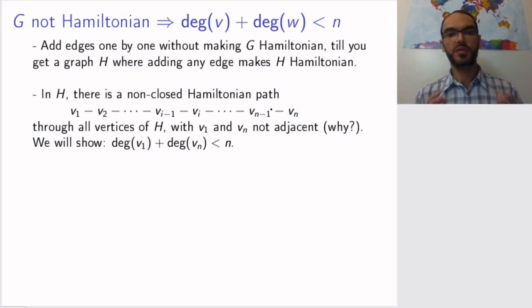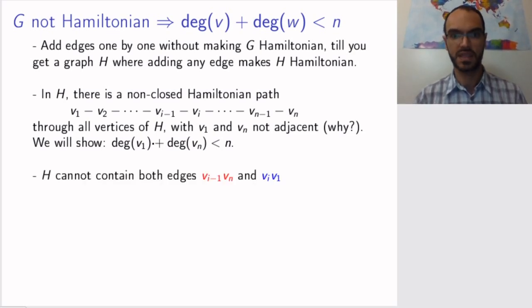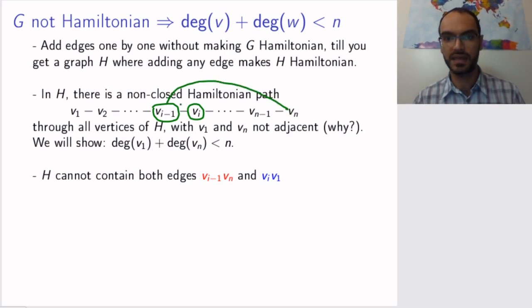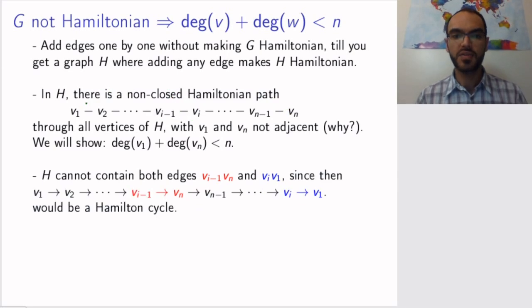Now, what we will show is that these non-adjacent vertices v₁ and vₙ in fact satisfy this property that the sum of the degrees is smaller than n. Why is that? Well, if you look at any vertex vᵢ inside this path and compare vᵢ and the vertex to the left of it, it cannot be the case that you both have an edge from the previous vertex to vₙ as well as an edge from vᵢ to v₁. Why? Because if you did, you would be able to construct a Hamiltonian cycle.